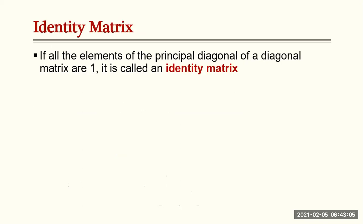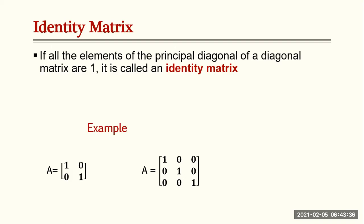The identity matrix: if all the elements of the principal diagonal of a diagonal matrix are one, then it is called an identity matrix. Since a diagonal matrix is a square matrix, an identity matrix must also be a square matrix. For example, the matrix [1, 0; 0, 1] has all principal diagonal elements equal to one with all other elements zero, making it a two by two identity matrix.